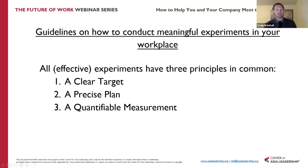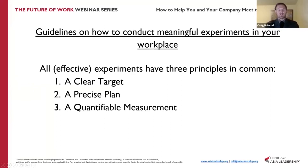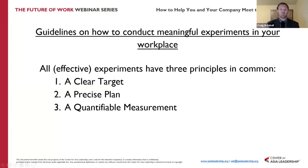A precise plan is what is going to take place — what changes are going to be made in the processes. For employee motivation, what changes are you going to make to try to get to your target? And importantly, as I mentioned earlier, is having a comparison group. Say you have 20 employees: a precise plan means for these 10 employees we're going to do X, and for these 10 employees we're going to continue what we did before.